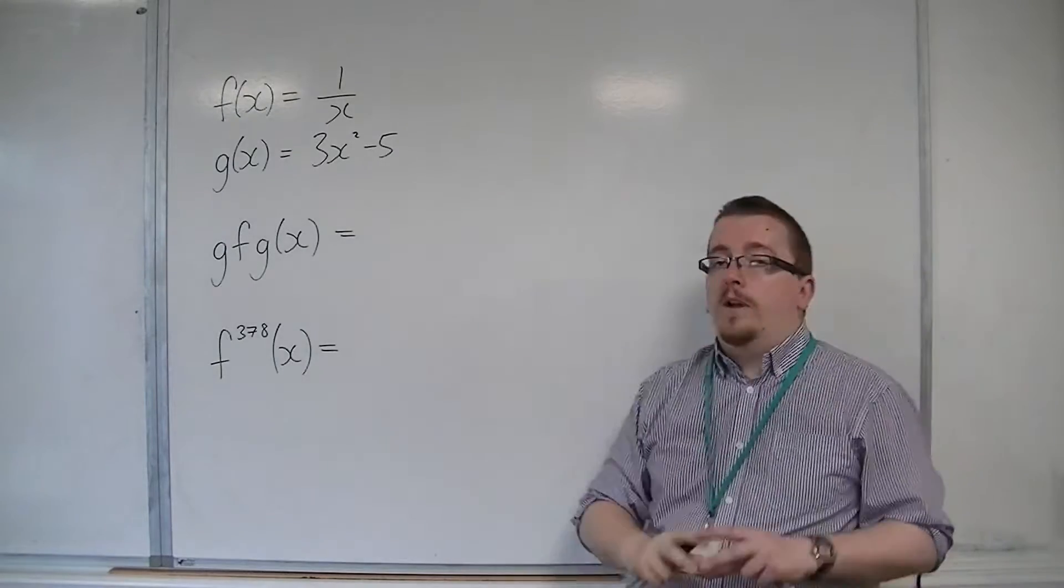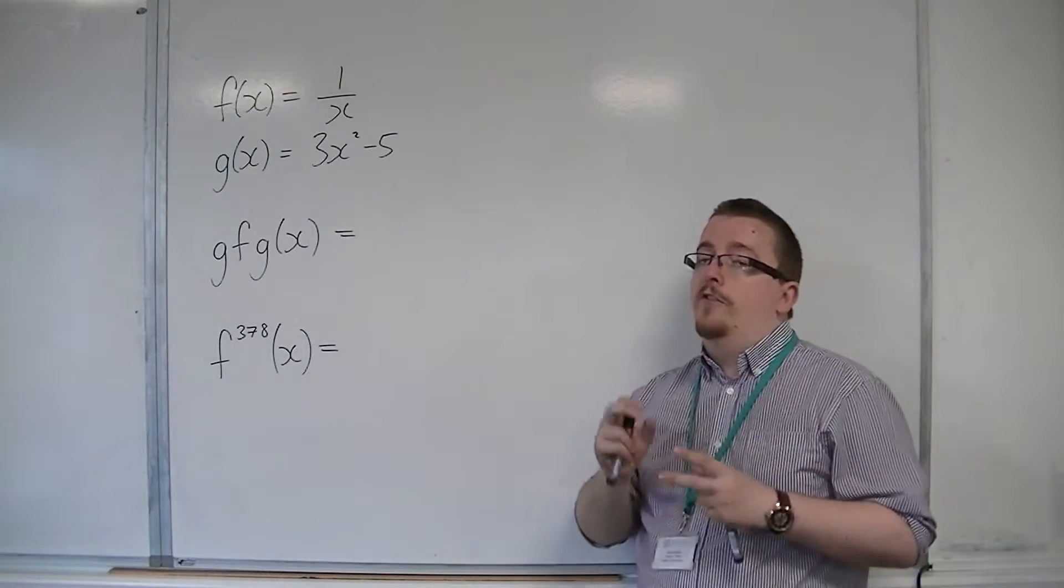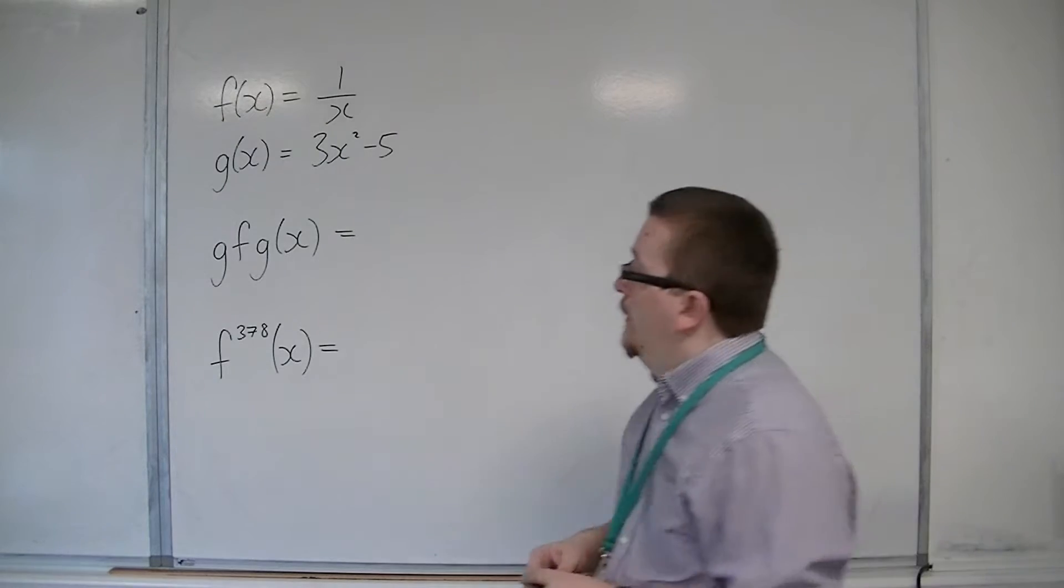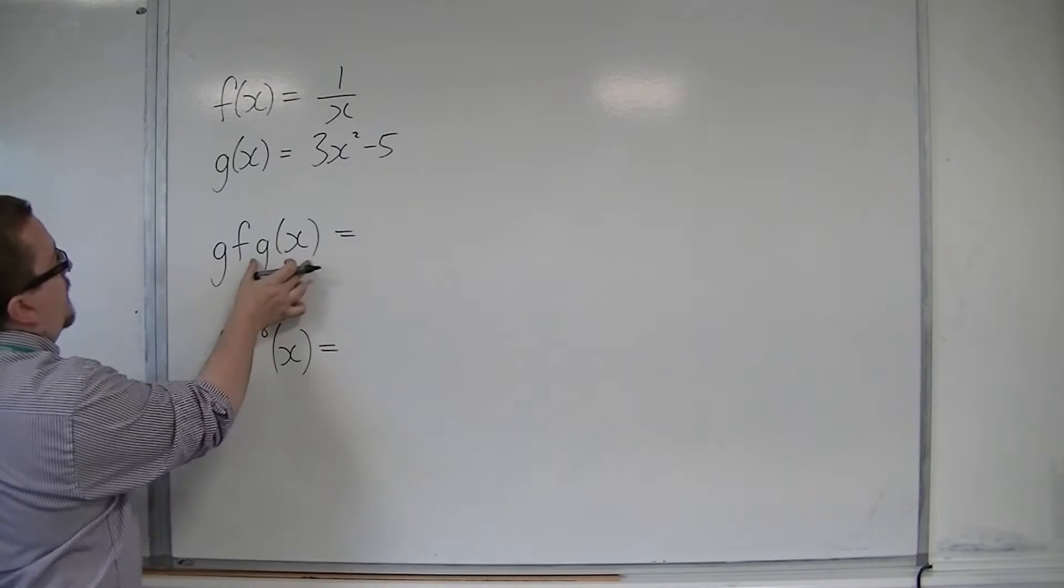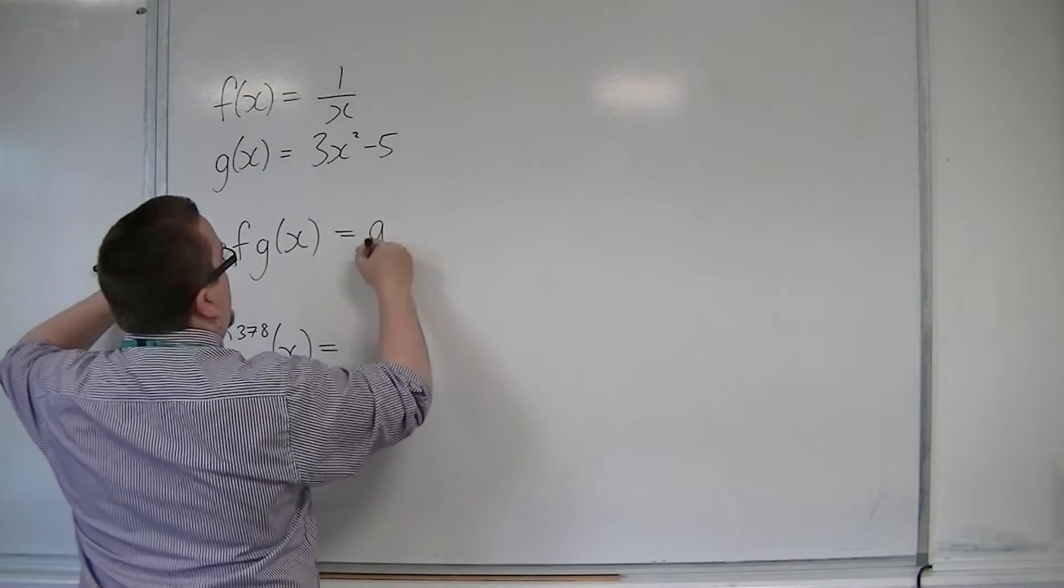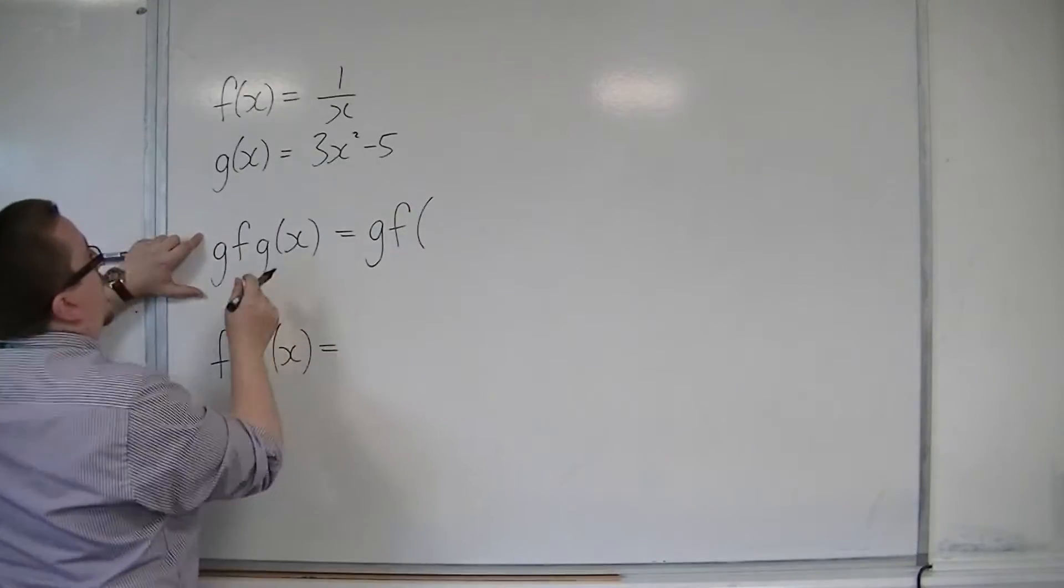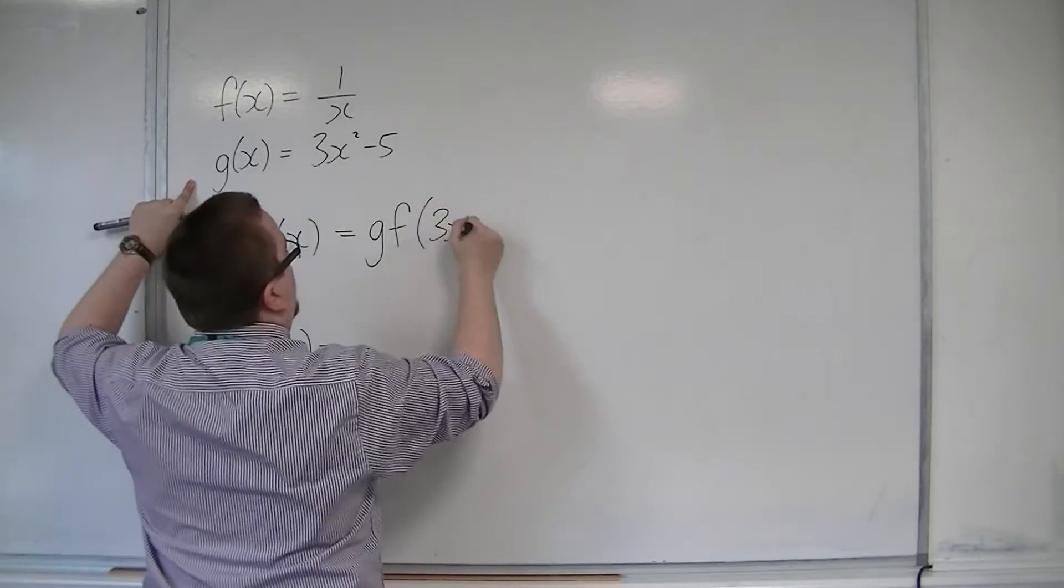First of all, we're going to try and find out what gfg of x is. So, working from the right, we first got to introduce g of x. So this is gf of g of x, so 3x squared minus 5.